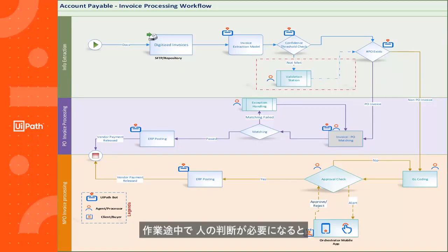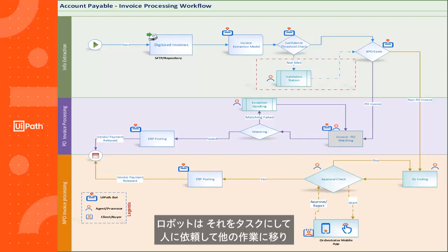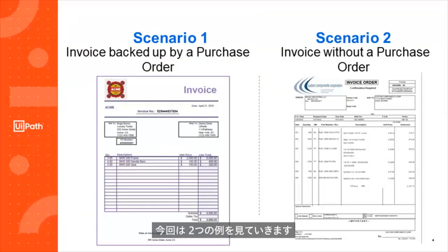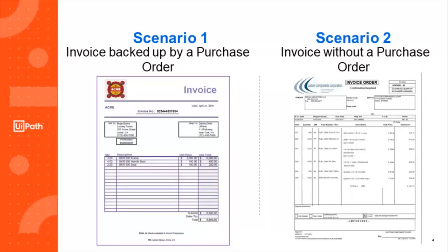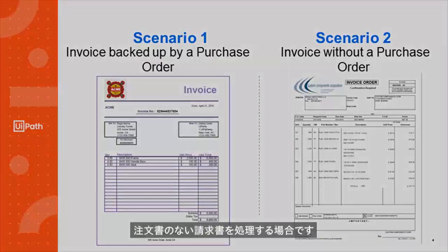During this process, if the robot needs human assistance, it automatically creates a task for a human and moves on with other jobs until the human performs the required action. Here we will look at two scenarios: first, an invoice backed up by a purchase order, and second, an invoice without a purchase order.